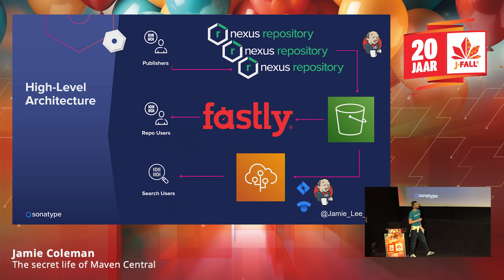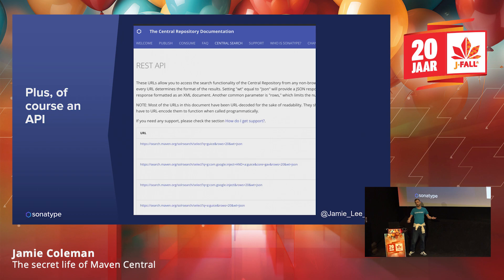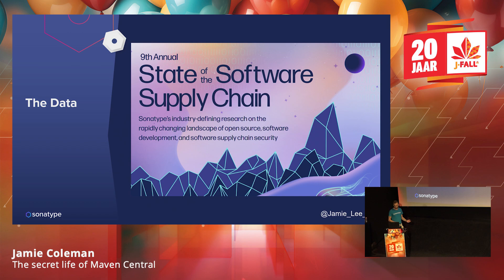Maven Central is very heavily used. This year alone we had half a trillion downloads, so you can imagine the throughput and how much AWS charges. The architecture isn't very complicated — it's largely based on Nexus Repository. Publishers publish and it goes into a Nexus repository, repo users use Fastly and BitBucket, and search users use tools like Jenkins to pull down and retrieve what they want. Of course we have APIs to automate processes.